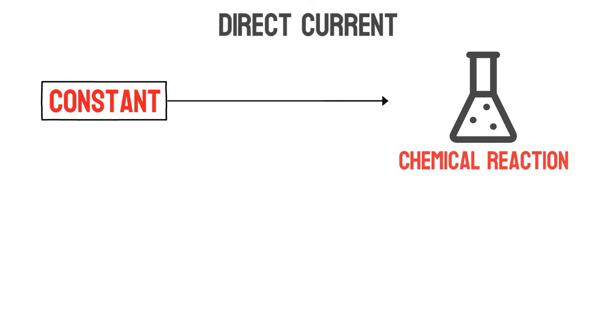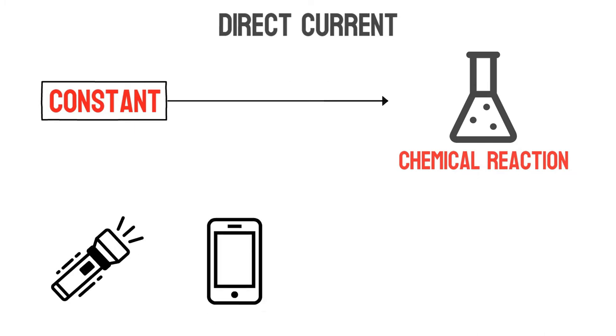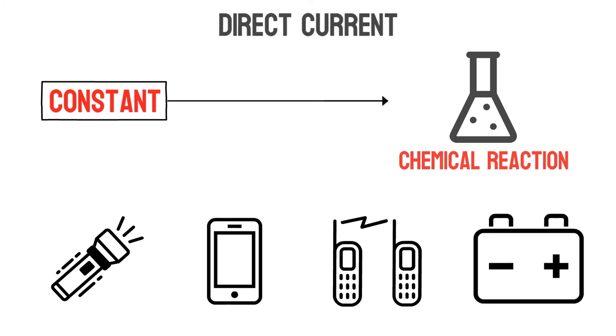Battery operated instruments such as a flashlight, cell phone, and cordless tools use DC, as does a car battery.